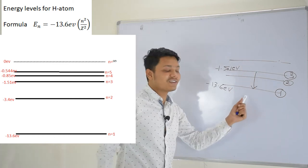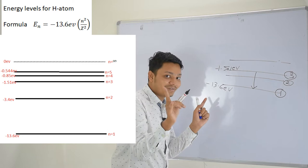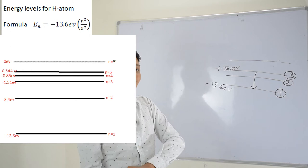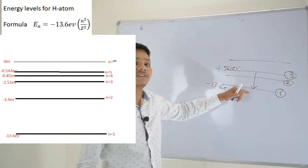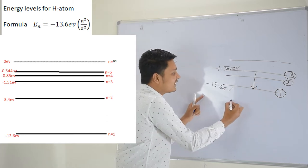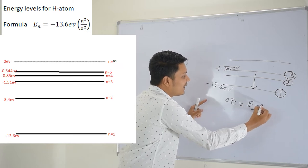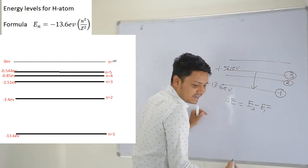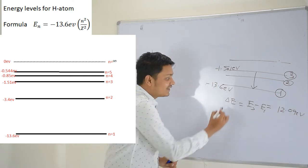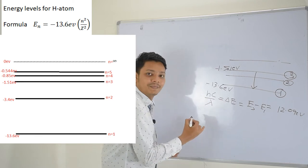So energy decreases. Here the magnitude is more, but the minus sign is there — be careful. Energy is decreasing, and the decrease in energy when it jumps from a higher state to a lower state will be emitted as a photon. So the difference in energy, delta E, that is E3 minus E1, you will get around 12.09 eV.